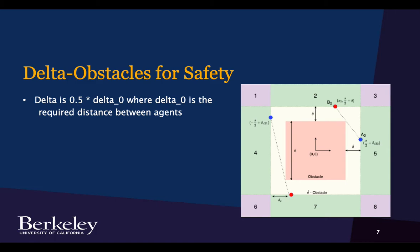The reason we need to augment all obstacles with this shape is that if an agent avoids a delta obstacle, then the moment they see another agent, they will be at minimum two delta away from that agent.